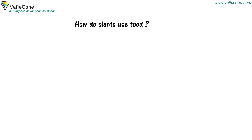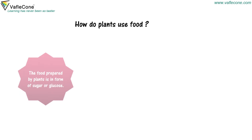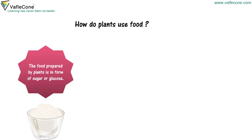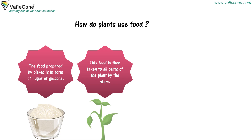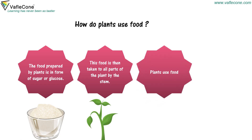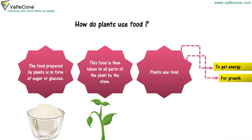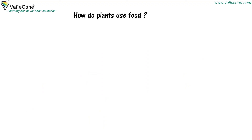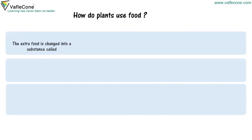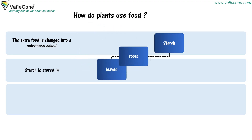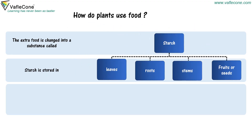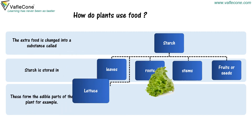The food is then taken to all parts of the plant by the stem. Plants use food to get energy for growth. The extra food is changed into a substance called starch. Starch is stored in leaves, roots, stem, fruits or seeds. These form the edible part of the plant — for example, lettuce, sugarcane, etc.